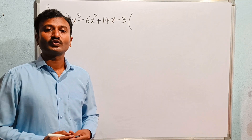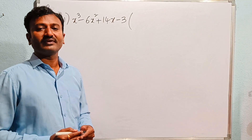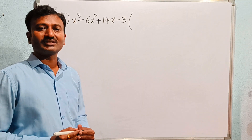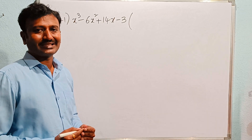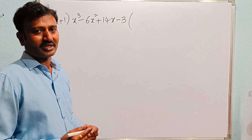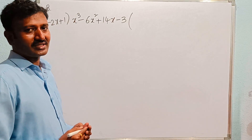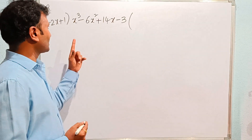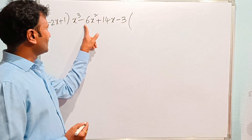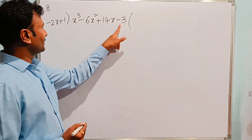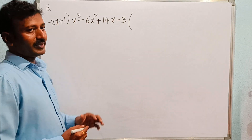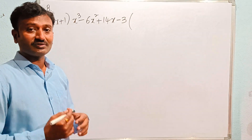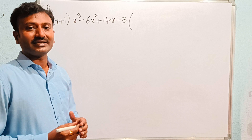Hi friends, welcome to our channel. Today we will discuss one most important question from ninth class, second chapter. Exercise 2.2, eighth question: find the remainder when the polynomial is divided by one minus two x.